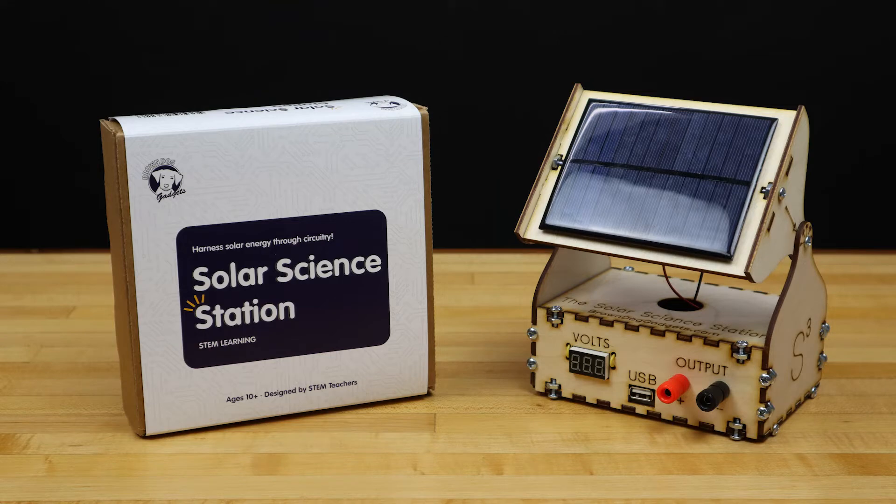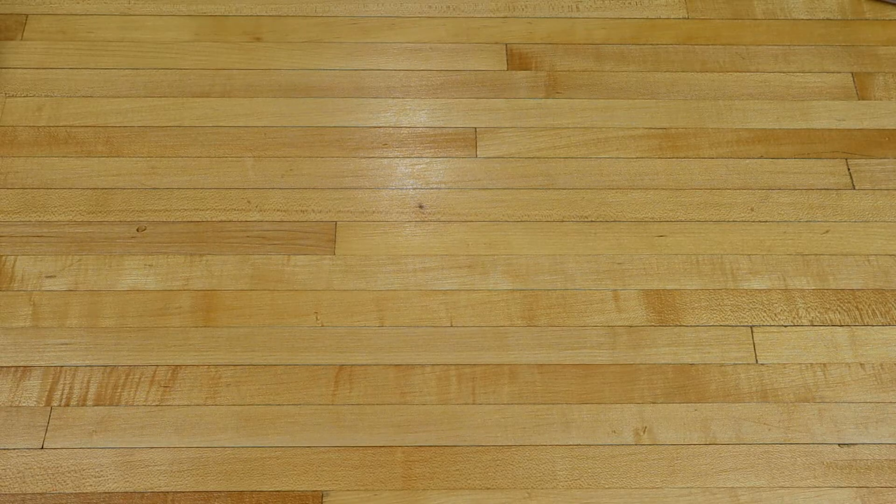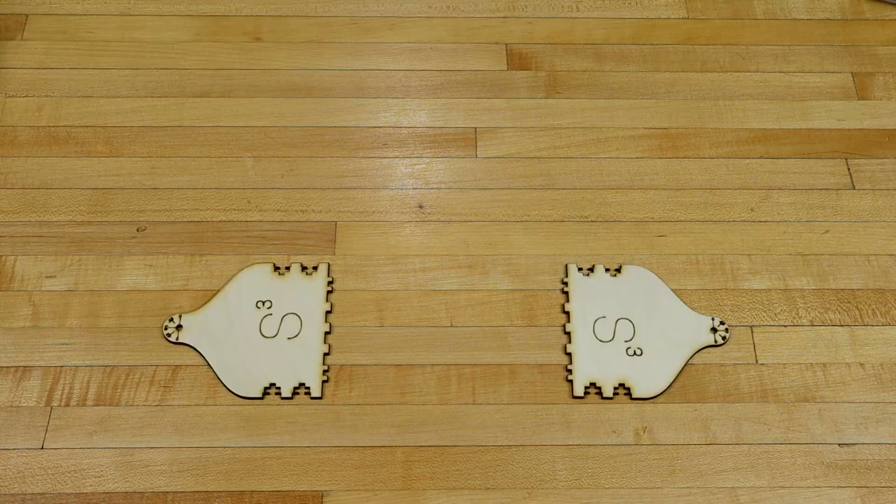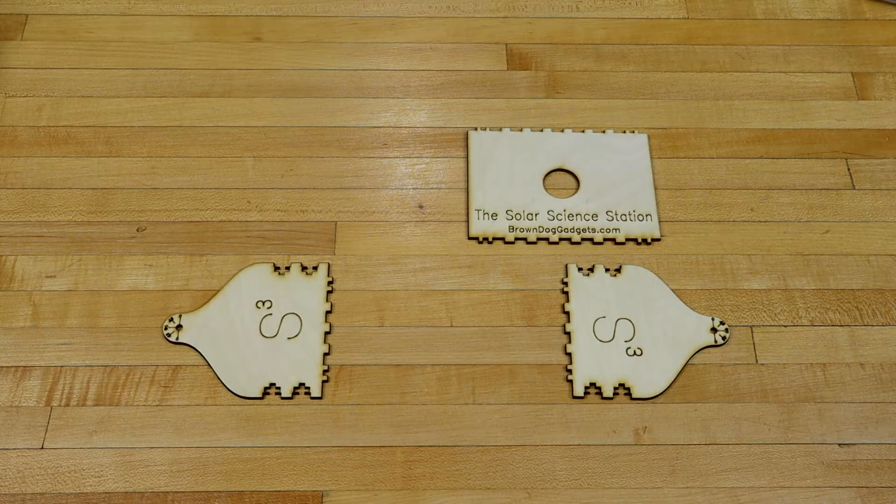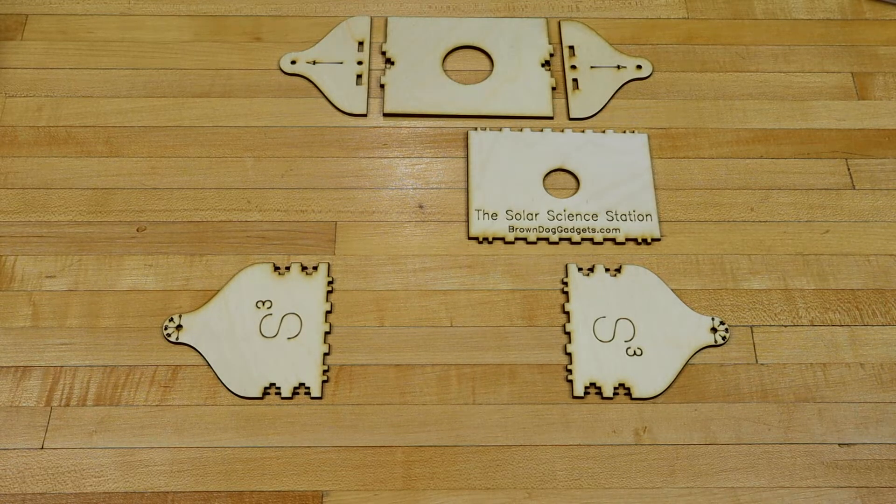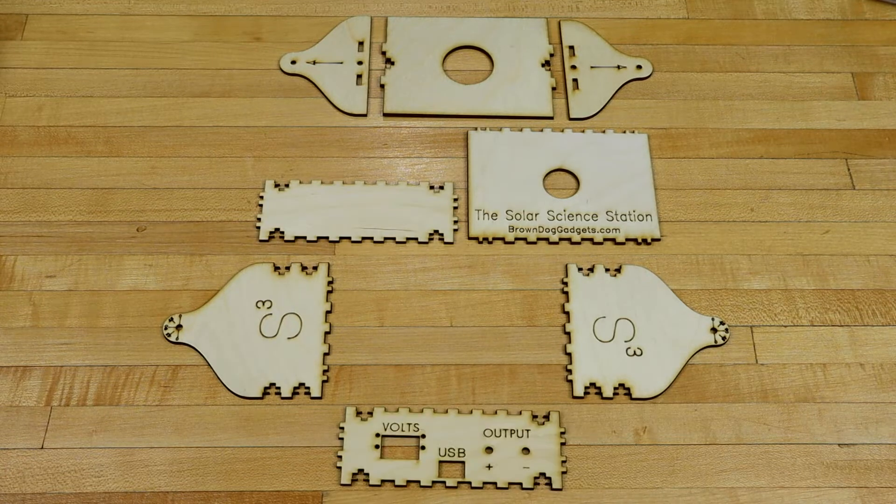For this project, we'll need components from the kit, starting with the wooden case, sides, top of the box, sides of the mount for the solar cell, cross beam for the solar cell, back and front of the box.